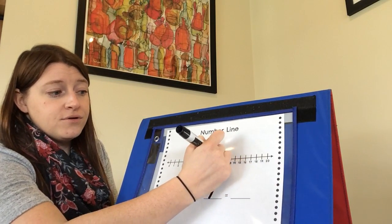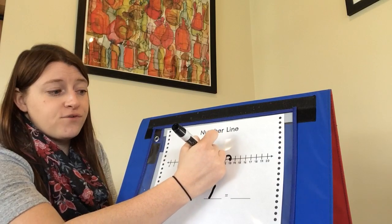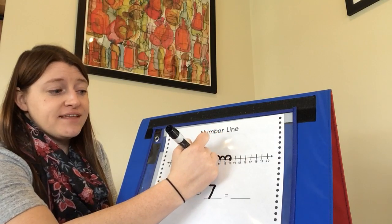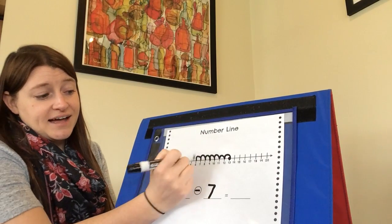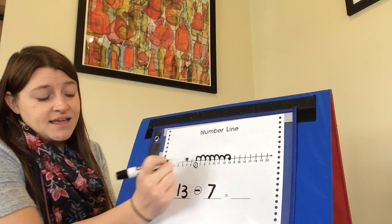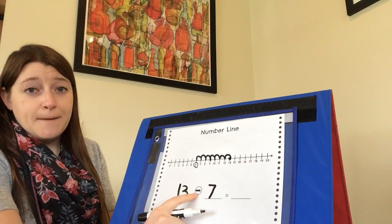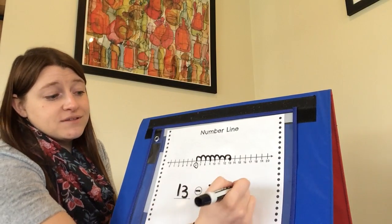One, two, three, four, five, six, seven. I ended on the number six. That tells me that thirteen minus seven equals six.